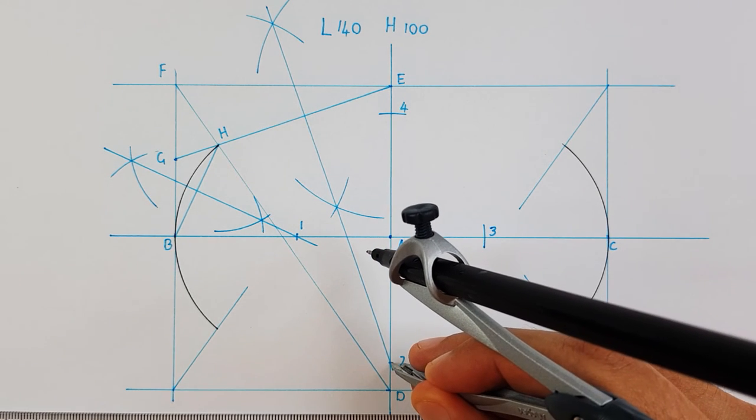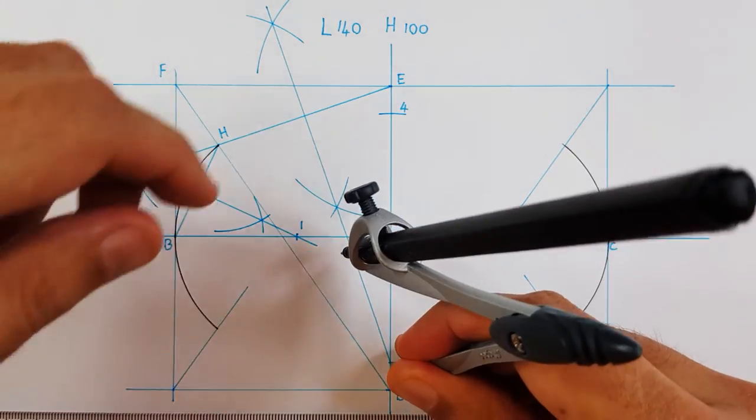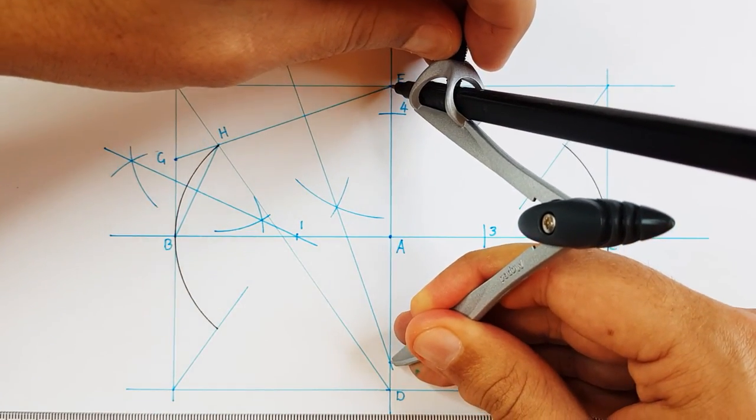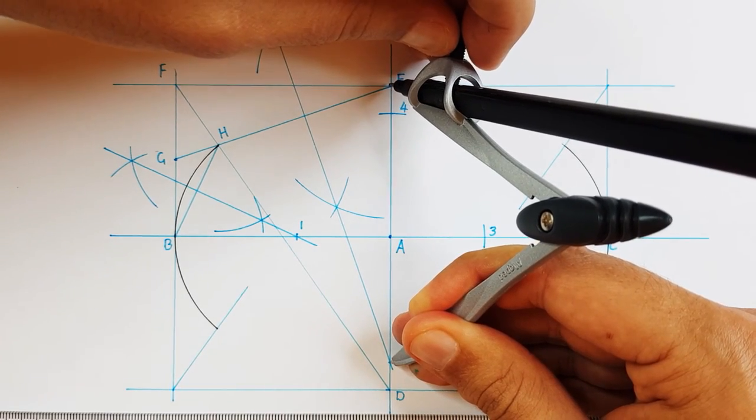And then finally place your compass on point 2 and adjust it all the way to point E. This measurement will be used to draw the final part at the top and the bottom of my ellipse.